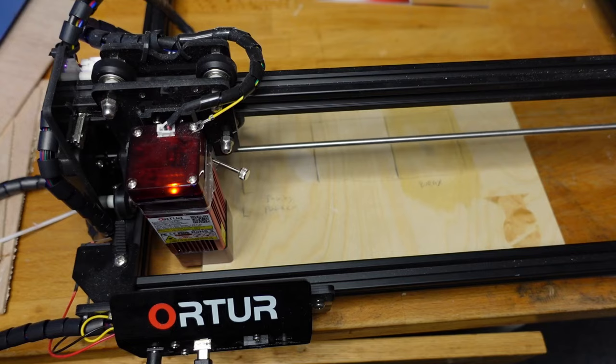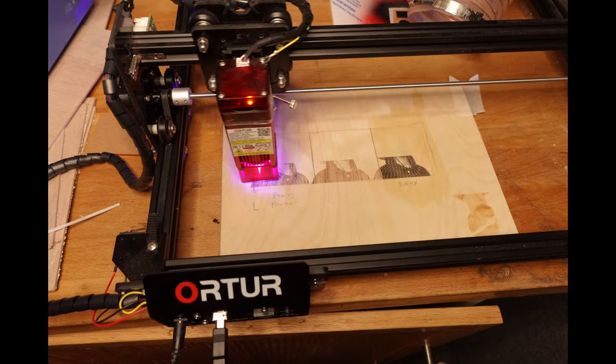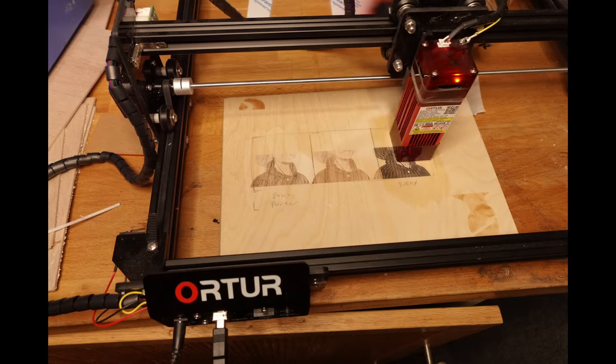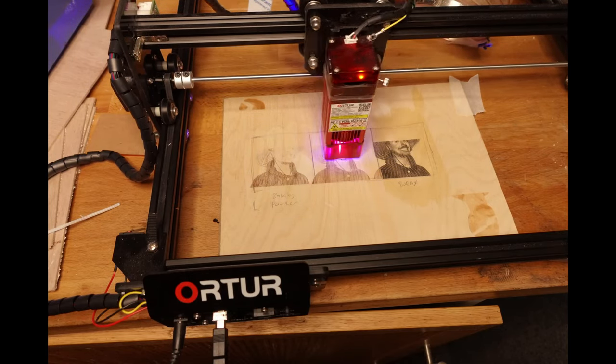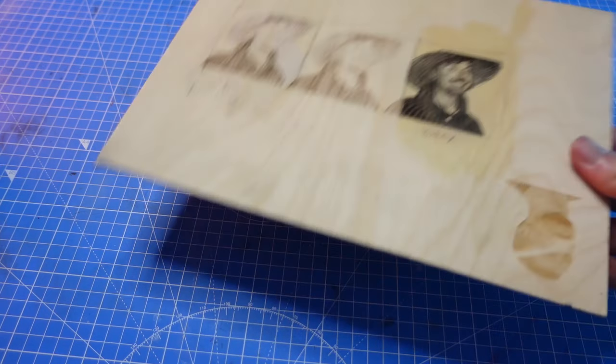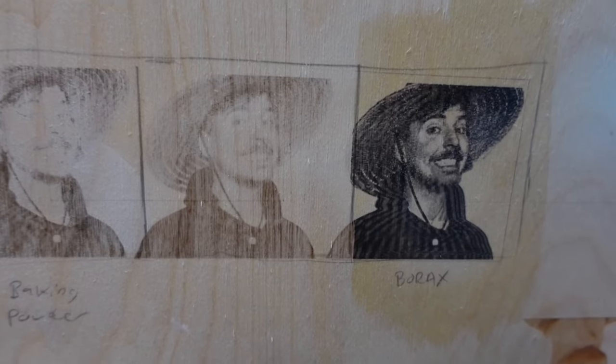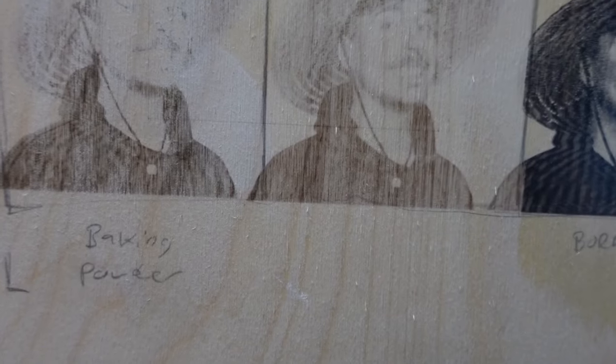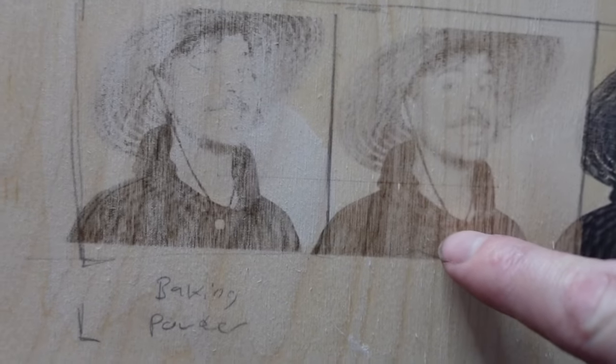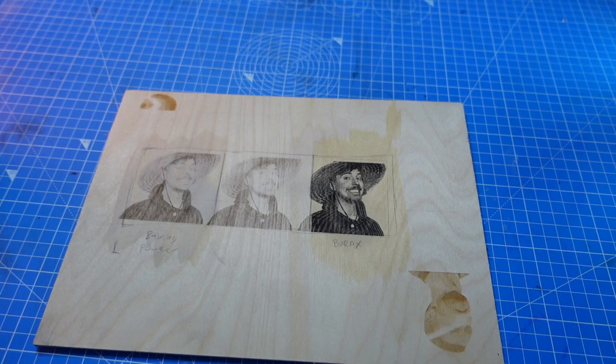All right then guys, we're back and let's have a look at this engraving. Now the borax one looks absolutely fine. Just have a test piece with nothing on it - yeah, it looks all right. But then the baking powder one, it definitely looks darker than the one without anything on it, but there's not as much detail in there.